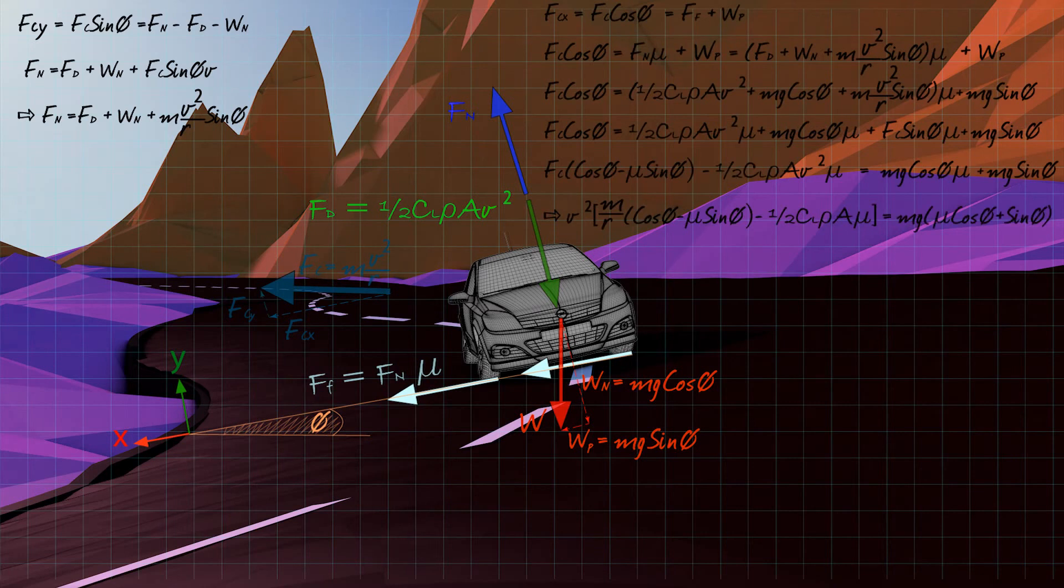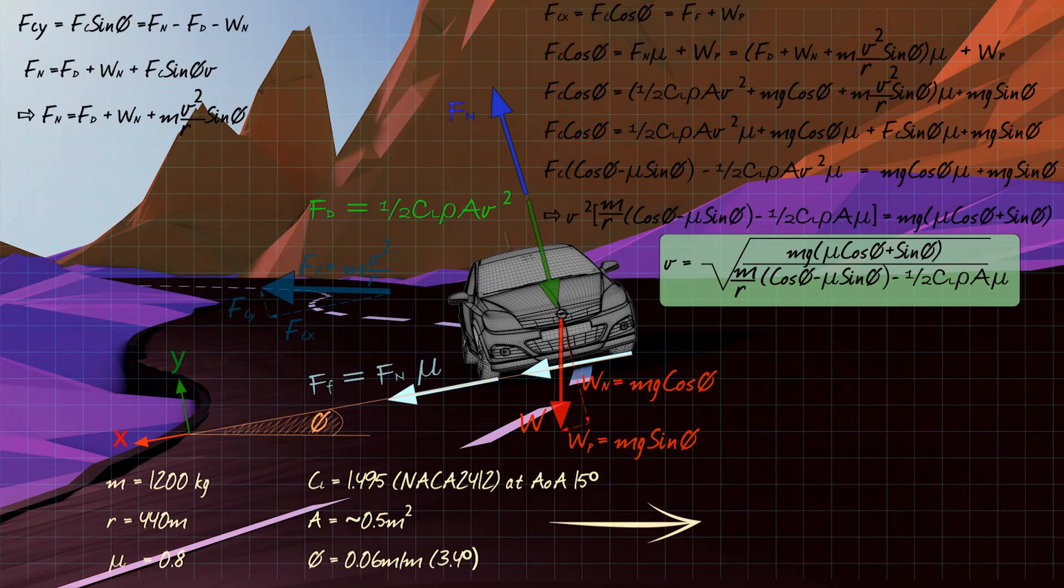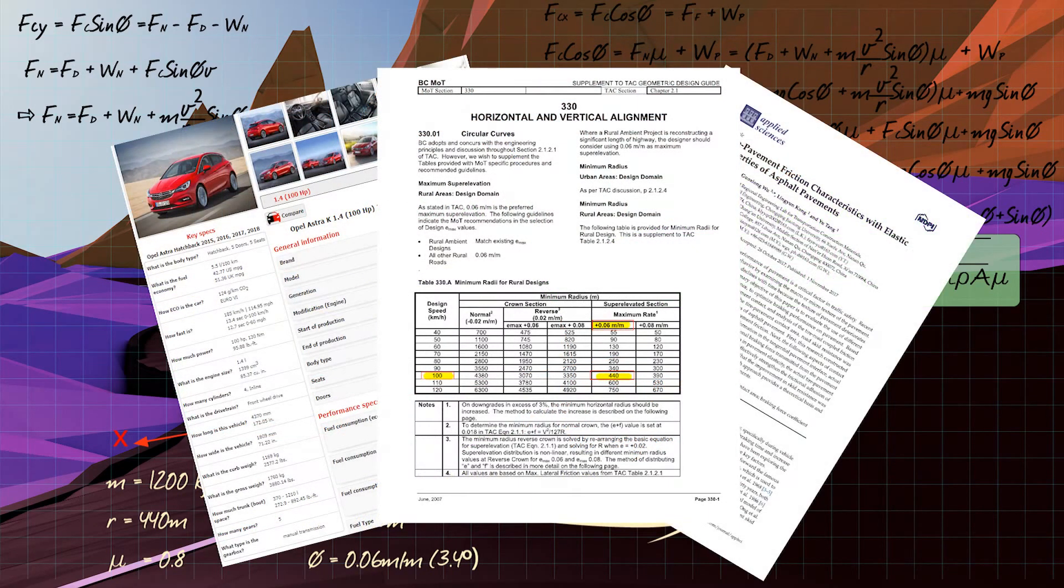If we enter parameters as specified by the Ministry of Transportation of British Columbia for a 100 km per hour design speed, the minimum radius for a curve is 440 meters with 6% superelevation.